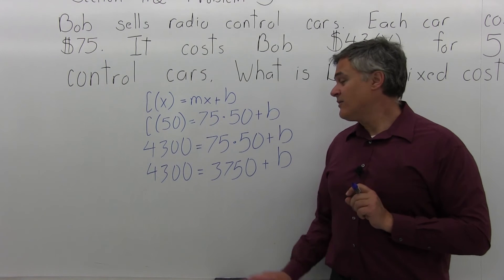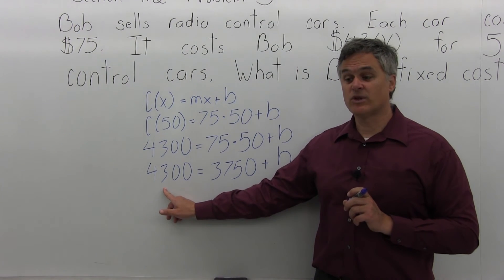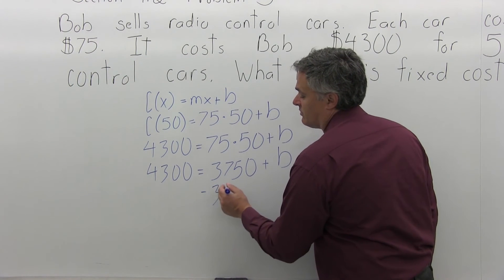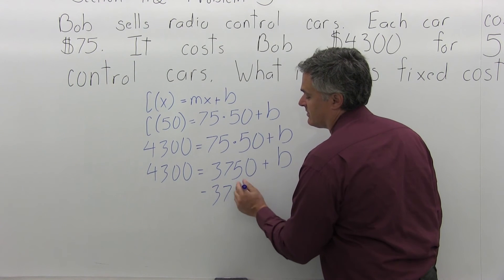Now to get the B by itself, all I really have to do is get the 3,750 over on the left with the 4,300. So to accomplish that, I'm just going to do minus 3,750 on both sides of the equation.